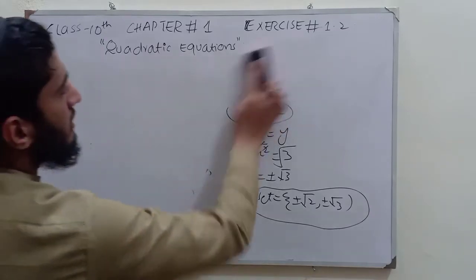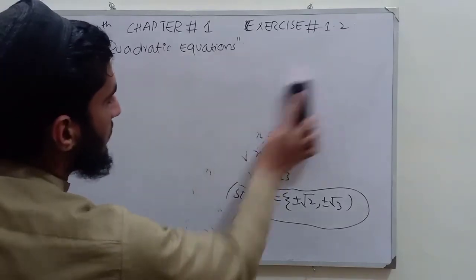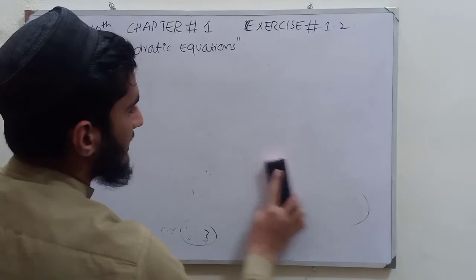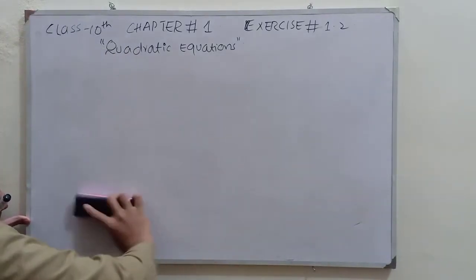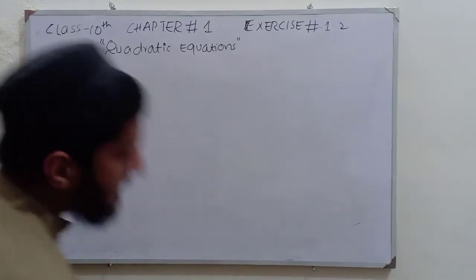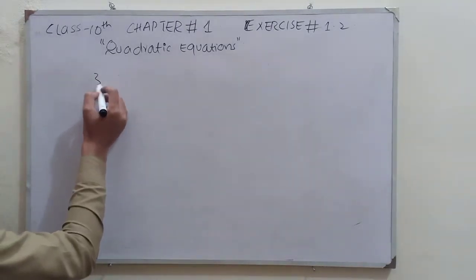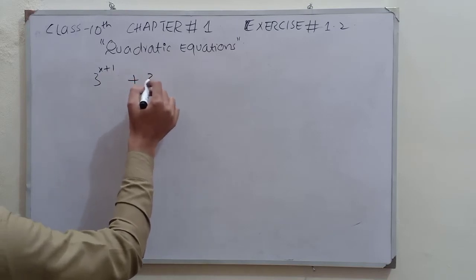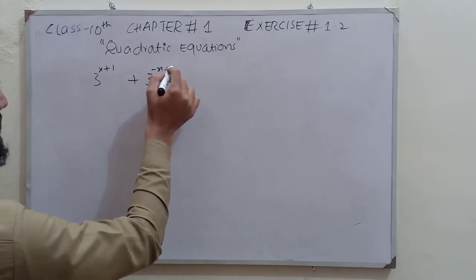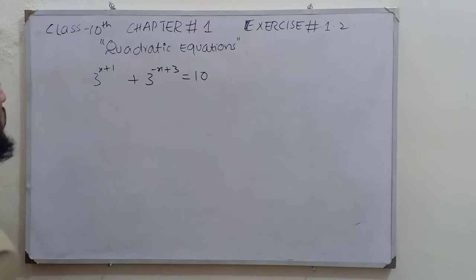Now we are going to solve another question related to exercise 1.2, but this question is in exponential form. Let's take the example: 3^(x+1) plus 3^(-x+3) equals 10. We can solve this type of exponential equation with the help of a quadratic equation very easily.